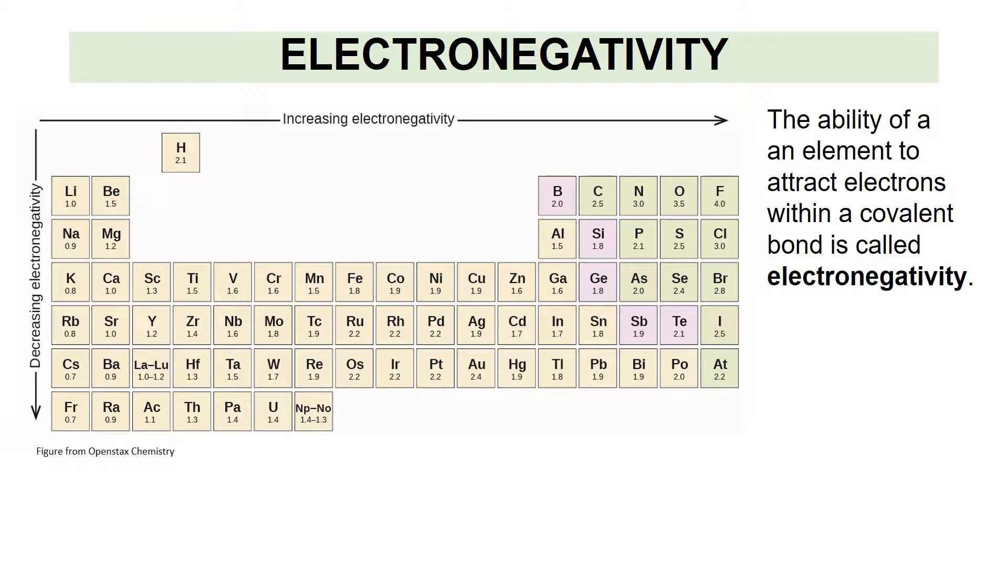This table here shows the electronegativity of the elements, and what I want you to notice is fluorine is the highest. It is the most electronegative element. And electronegativity increases as you go across and decreases as you go down. So there's a periodic trend.